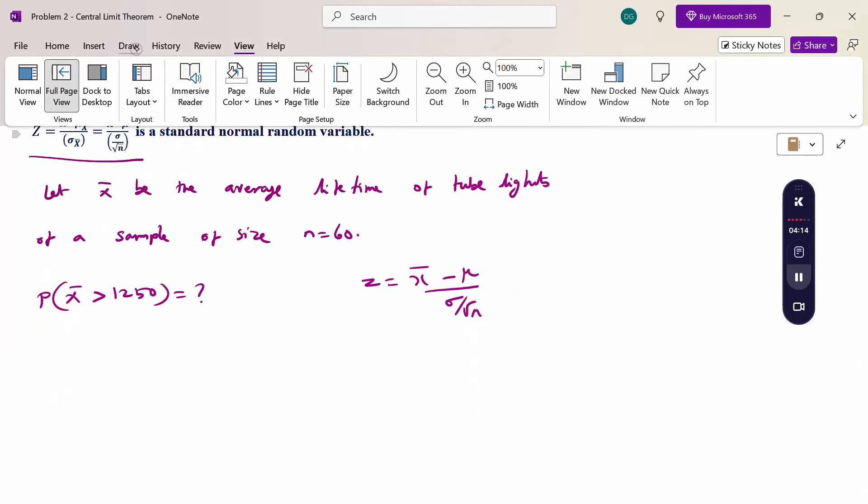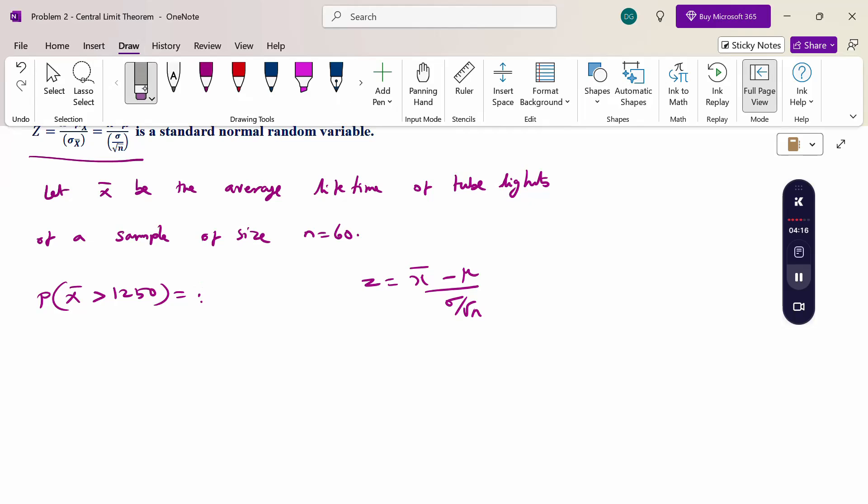I am going to use normal distribution. How to convert? This term x bar, z = (x bar - mu)/(sigma/sqrt(n)). For this term, convert z. The probability x bar greater than 1250, subtract mu from both sides and divide by sigma root n.